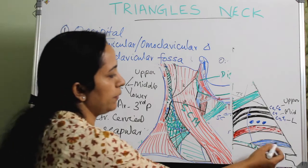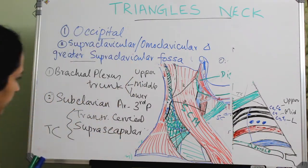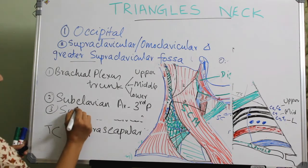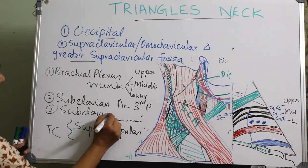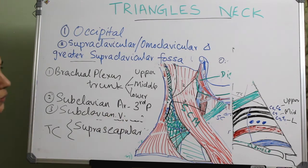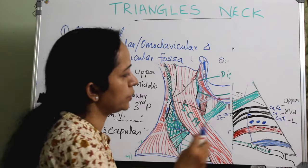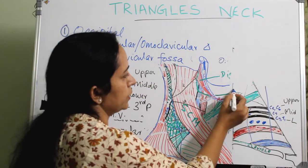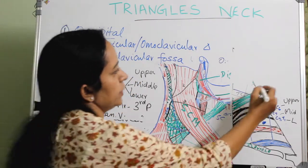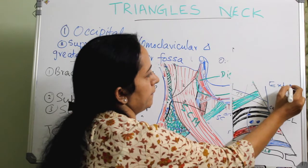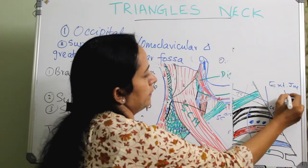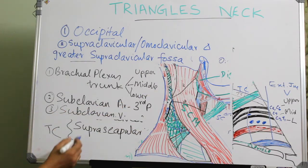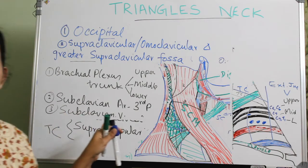The subclavian vein is also a content of the supraclavicular triangle, along with the terminal part of the external jugular vein and a small part of the transverse cervical vein, all running alongside the subclavian vein.